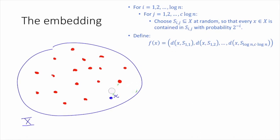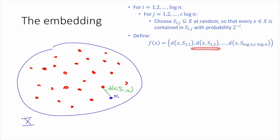Now, I'm going to forget that I've done all of that, and do it again. So I'm going to pick another random set where each point is included with probability one half. Then once again, I'm going to find the closest point to x in this set. So then I'm going to take this distance, which is d(x, S_{1,2}), and I'm going to write that as the second coordinate in my embedding. And now I'm going to erase what I just did. After I've done this c times log n times, so I've exhausted over all of the possible j's, I'm then going to switch i.